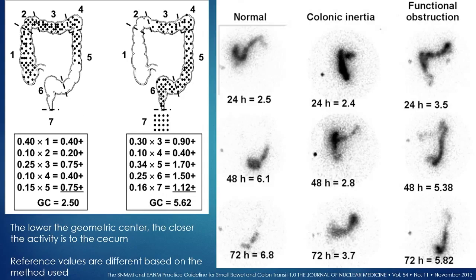Each processing method has different reference values, but suffice it to say, lower numbers at later times are not good. Here is a normal study with tracer activity moving through the colon and a high geometric center number. In a patient with colonic inertia, activity is barely into the transverse colon at 24 hours and is still primarily in the transverse colon at 72 hours — an abnormal study.